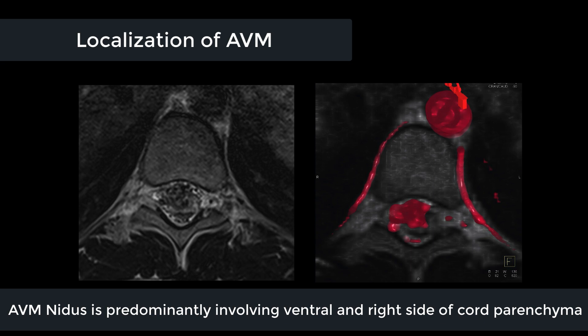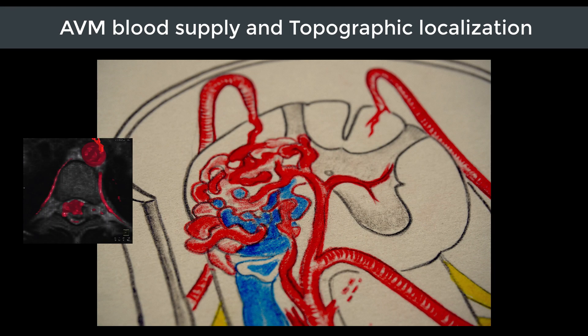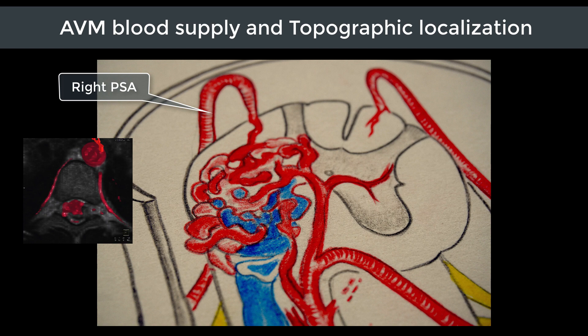In this particular case, the AVM has involved the ventral portion of the cord, more on the right side, with sparing of the left dorsolateral aspect. Therefore, in this case the AVM is predominantly supplied by the anterior spinal artery and is also supplied by the right posterior spinal artery. As the left dorsolateral aspect of the cord is spared and uninvolved by the AVM, the left posterior spinal artery is not supplying the AVM.